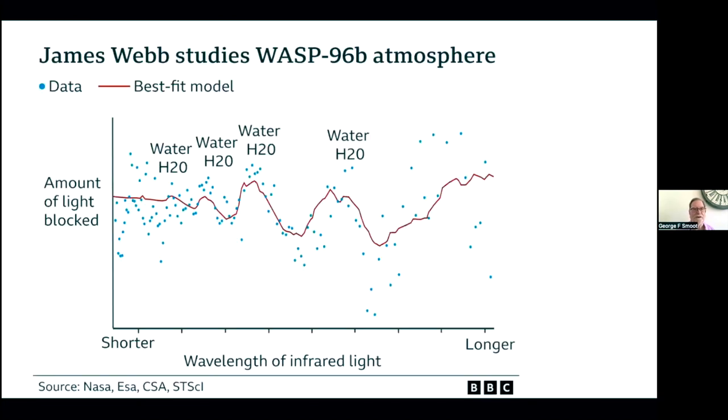Here is James Webb's studies of the gas giant WASP-96b atmosphere. This is a gas giant planet orbiting around a star. It was discovered earlier, but it passes in front of the star, and you can see starlight absorbed. And you look at the amount of light that's blocked versus the wavelength of the infrared light, and you see these bumps and dips, which are due to water vapor in the atmosphere. So you have absolute proof there's water vapor in this planet's atmosphere.